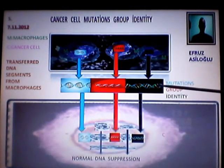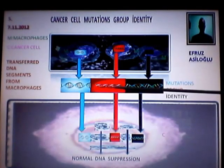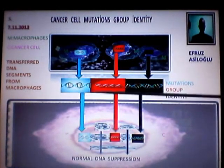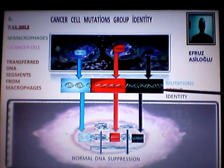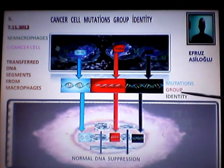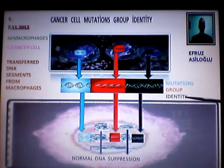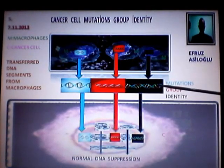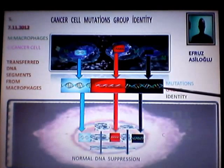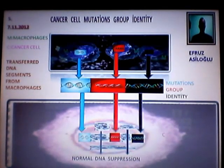These are mutations group identity. All of them are totally called mutations group identity. Multiple crossover, maybe I would say. Thank you very much.